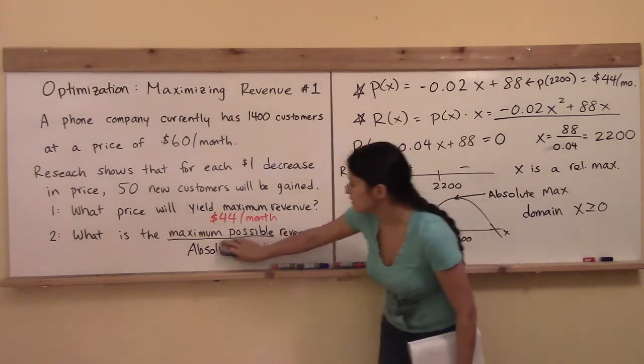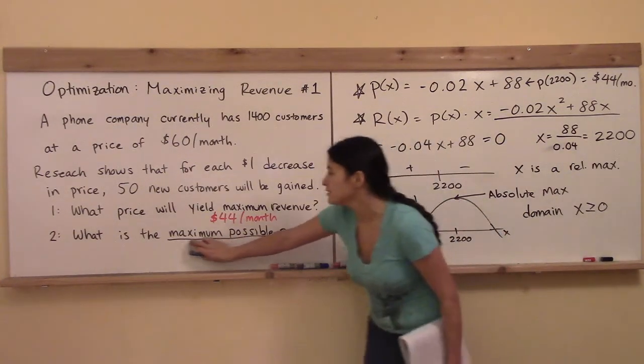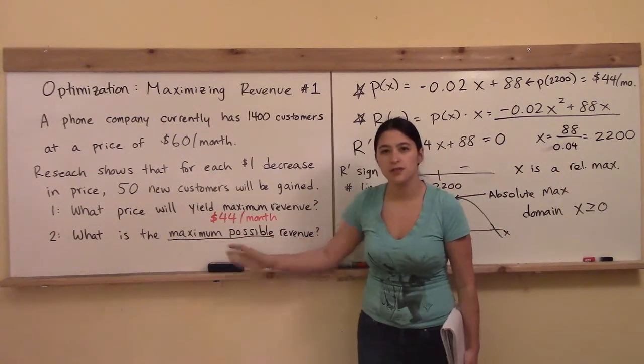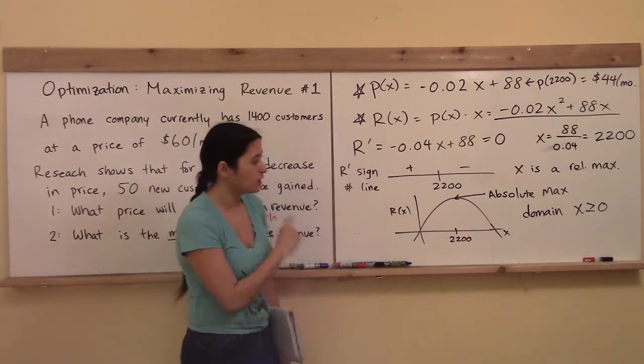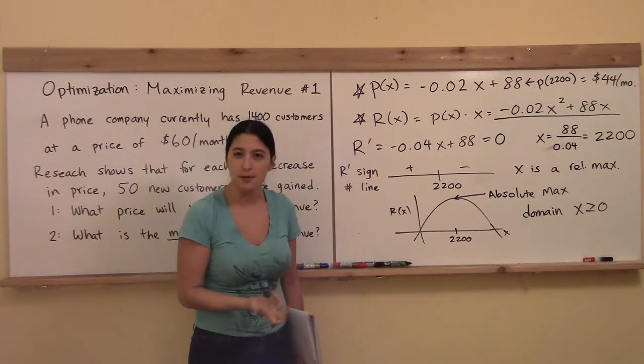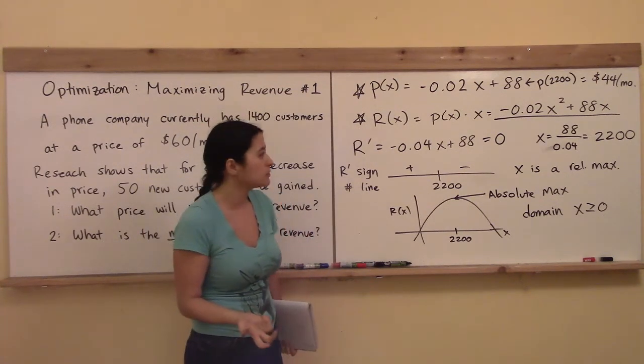Okay, the next specific question is, what is the maximum possible revenue? Did we answer that question? Well, it says absolute max right there, so that's good, but what is that number? Like, how am I going to find that number? Do you guys know?